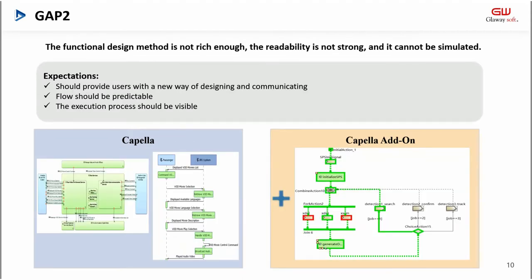The second gap: the functional design method is not rich enough, the readability is not strong, and it cannot be simulated. The expectations are: should provide users with a new way of designing and communicating, the flow should be predictable, and the execution process should be visible.